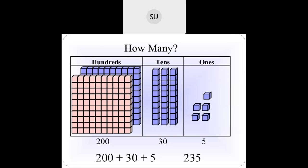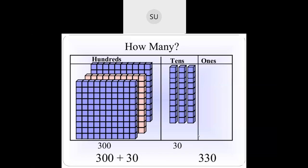Look at this next example. How many ones do we have? We have 5 ones: 1, 2, 3, 4, and 5. So we write 5 in the ones place. And how many 10s do we have? We have 1, 2, 3 tens, which is 30. And how many 100s do we have? We have 100 and 200. So 200 plus 30 plus 5 gives us 235.